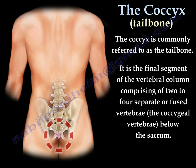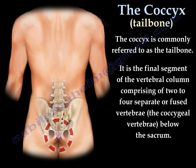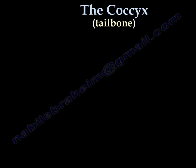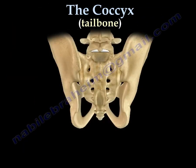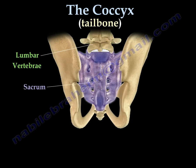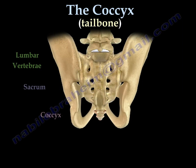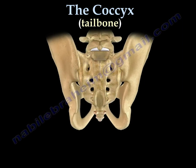The coccyx is at the lower end of the spine, below the sacrum. The lower back is called the lumbar vertebrae, followed by the sacrum, and then the coccyx — the tailbone.